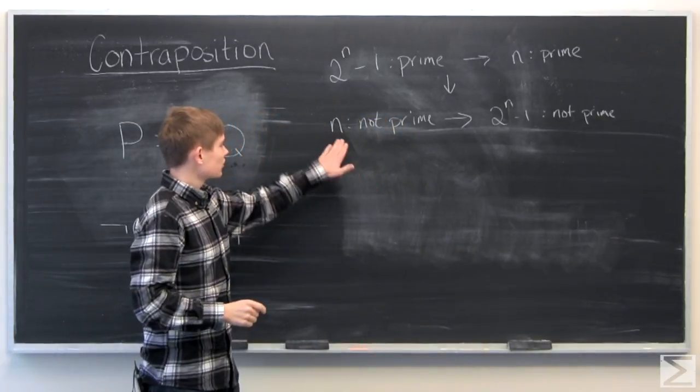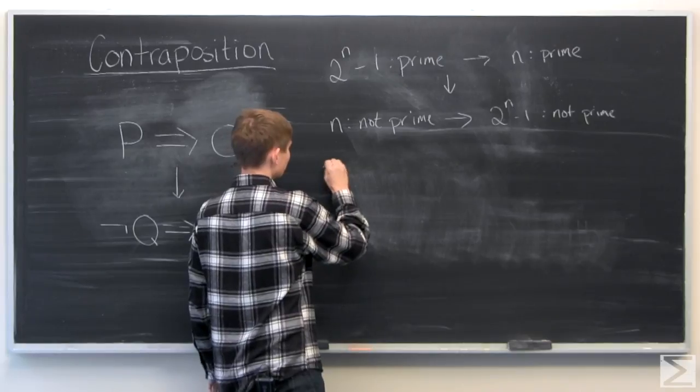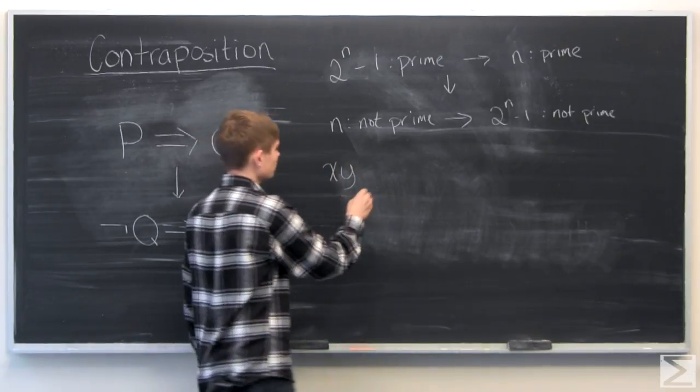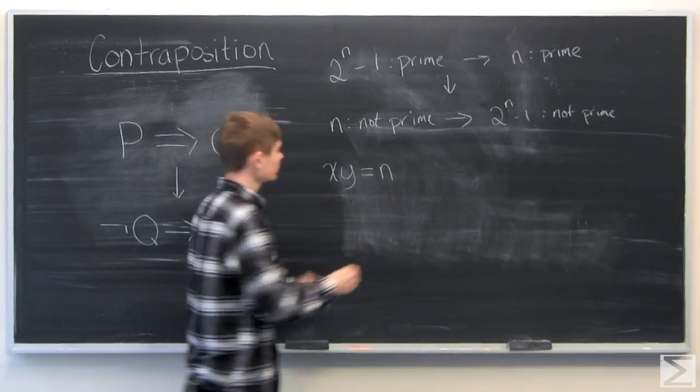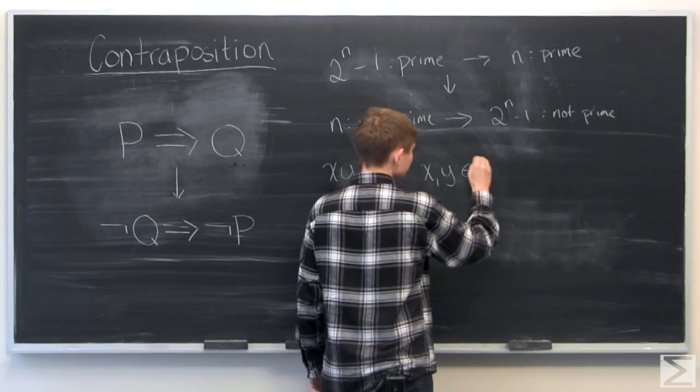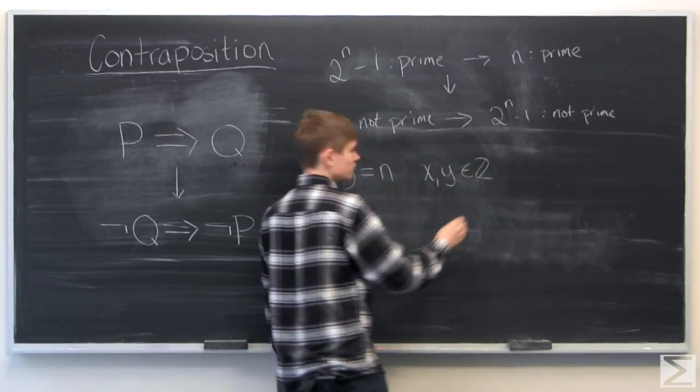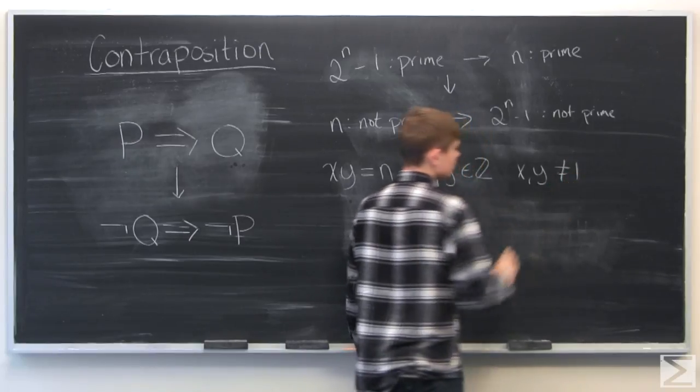So we can start off by, since n is not prime, that means there are two numbers x and y, when multiplied together equal n, where x and y are integers and x and y do not equal 1.